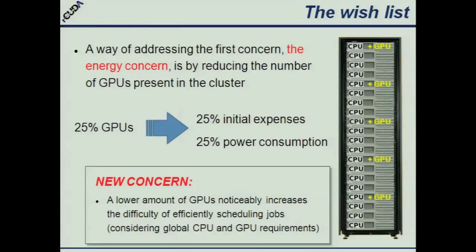How to solve these two concerns? The first one — the energy concern — could be as obvious as this: if we have a huge amount of GPUs and they remain idle, let's reduce the amount of GPUs so that they remain used all the time. For example, we could decide that we only need 25% of the GPUs — we would remove three GPUs from each four boxes. This would reduce the initial expenses when buying this cluster and also reduce power consumption. The problem is this new configuration brings some scheduling problems.